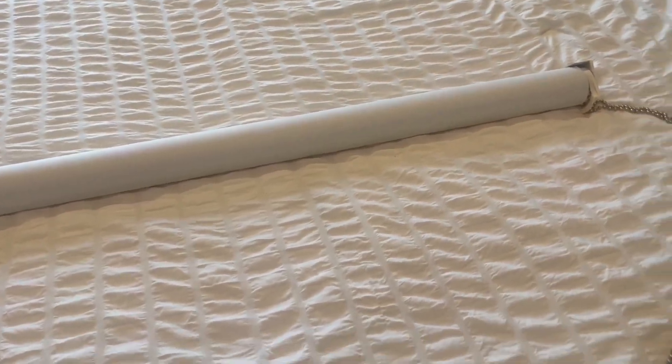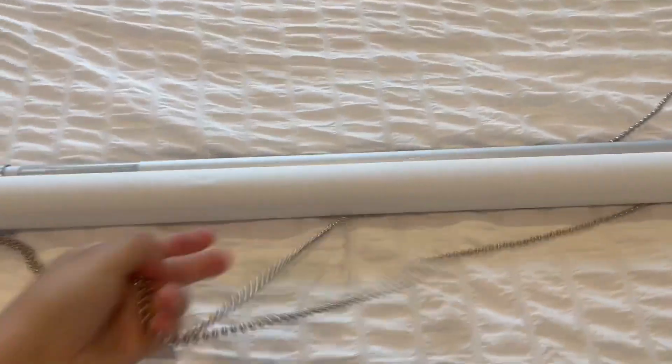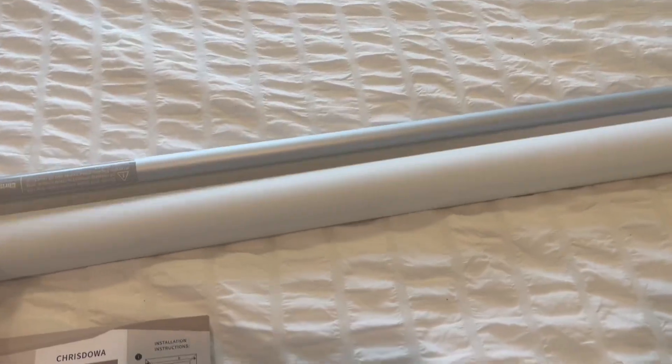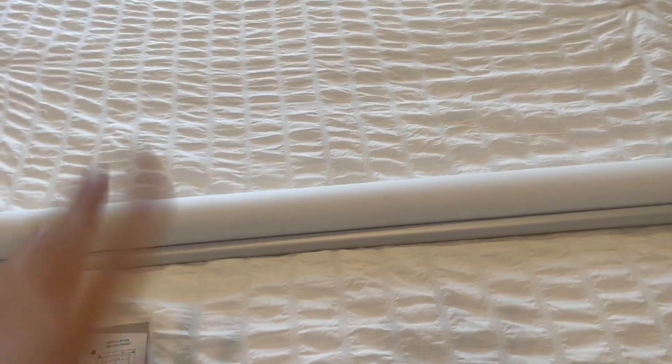And so for our bigger windows, we usually just put two side by side and we have the chains on this side and then on the other side of the window, the chains will be on the other side so that we can really pull up or down whatever ones we want, which I love.